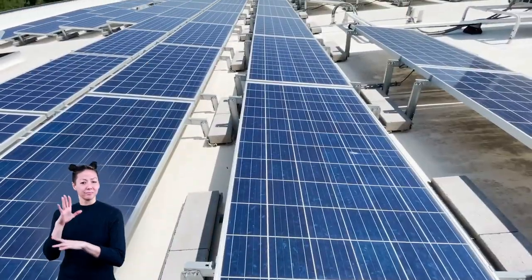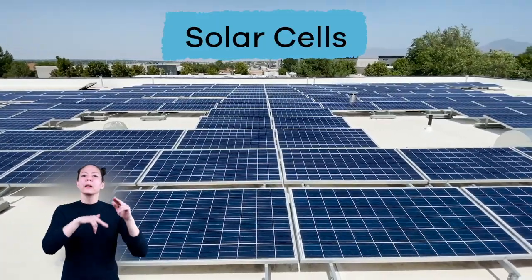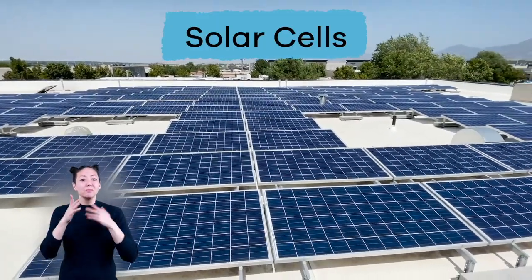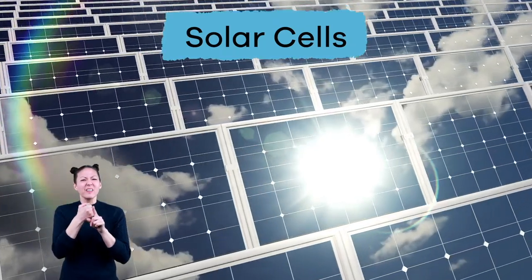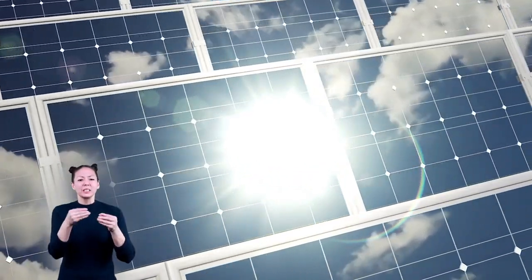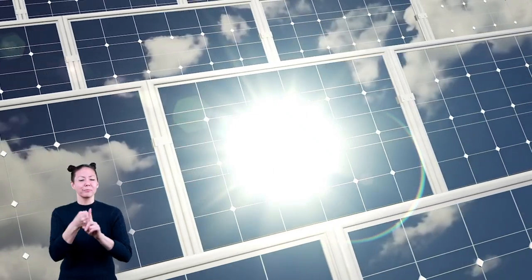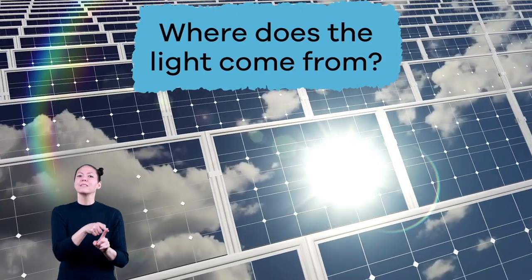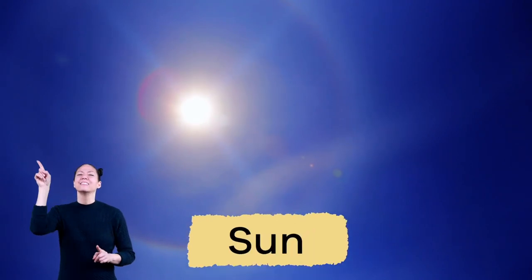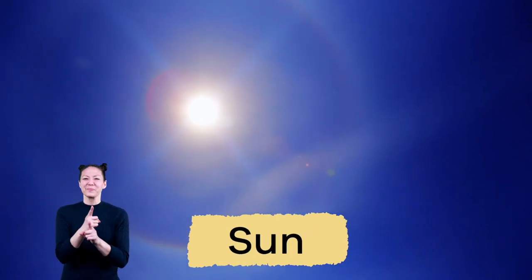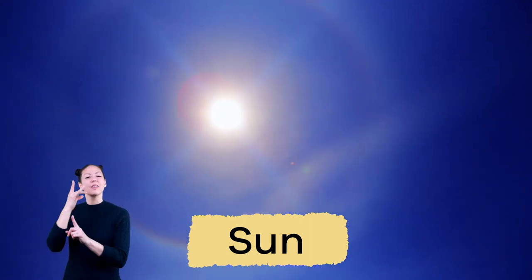Have you seen solar cells on the roofs of various homes and buildings? Maybe you even have some on your own home. They look like black rectangles made of glass. The materials inside the boxes release electrons when light shines on them, which then creates an electric current. Can you guess where the light comes from that shines on these boxes? If you said the sun, you're absolutely right. Solar cells use the light from the sun to make electricity.